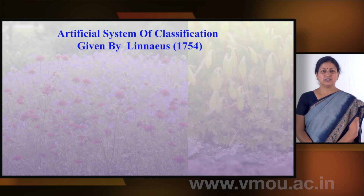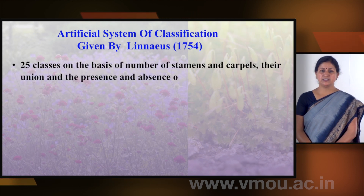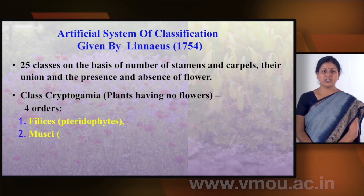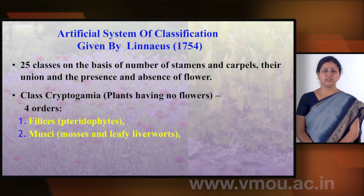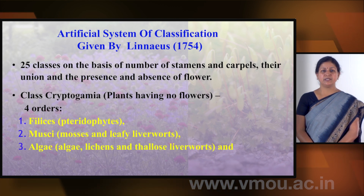Plants are classified by three systems. The first system was given by Linnaeus — the artificial system of classification. It is based on the number of stamens, carpels and their union, and the presence and absence of flowers. Twenty-five classes have been divided under this system.